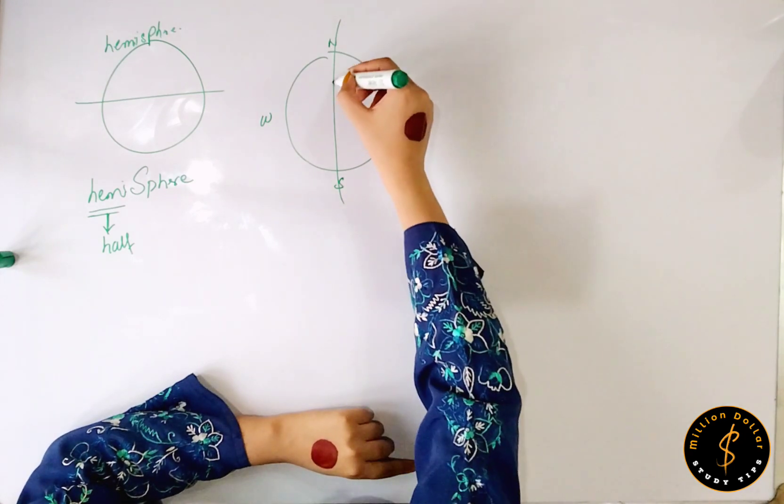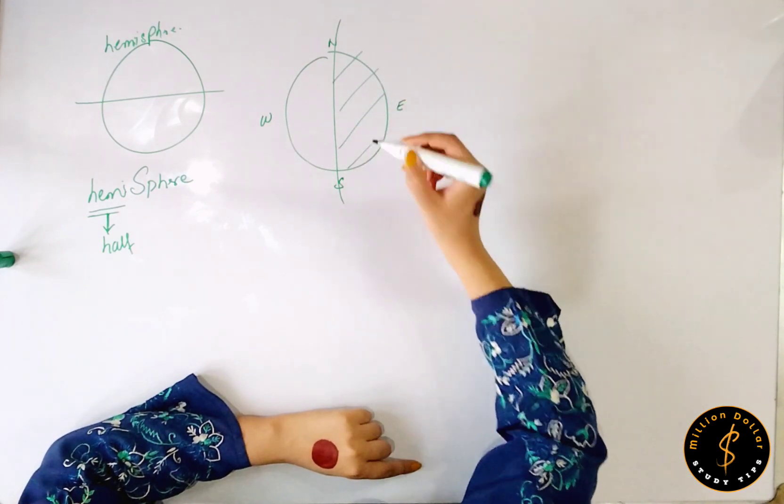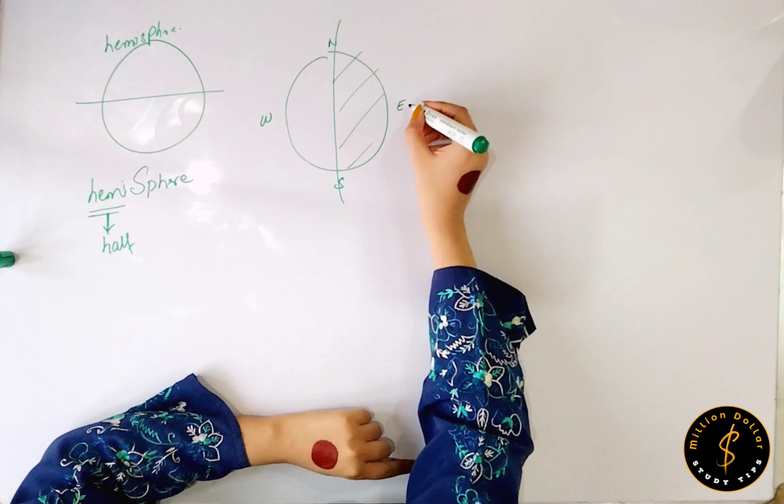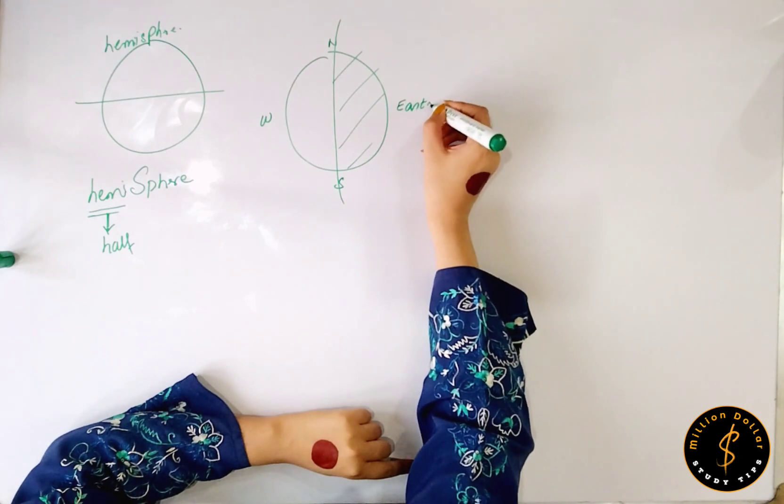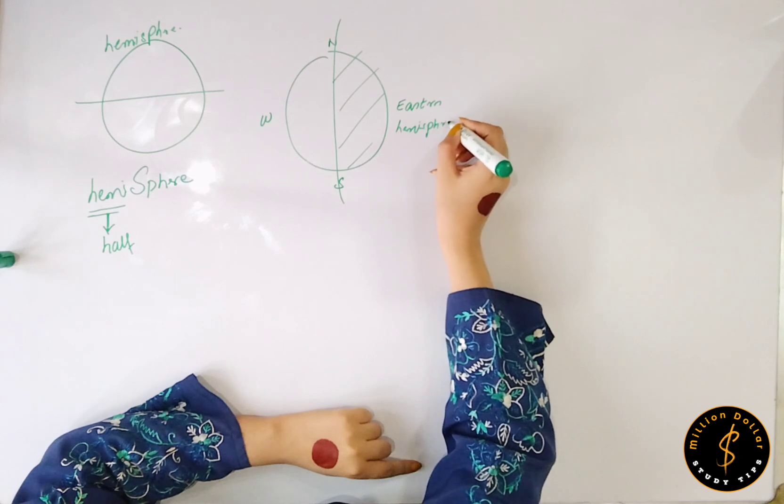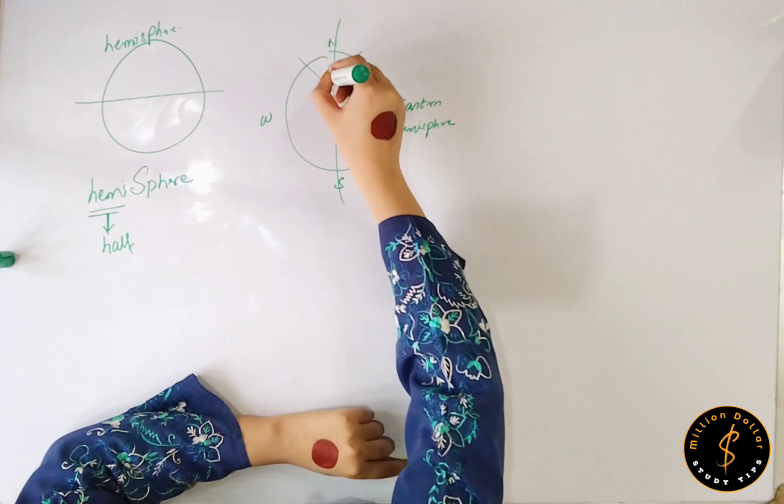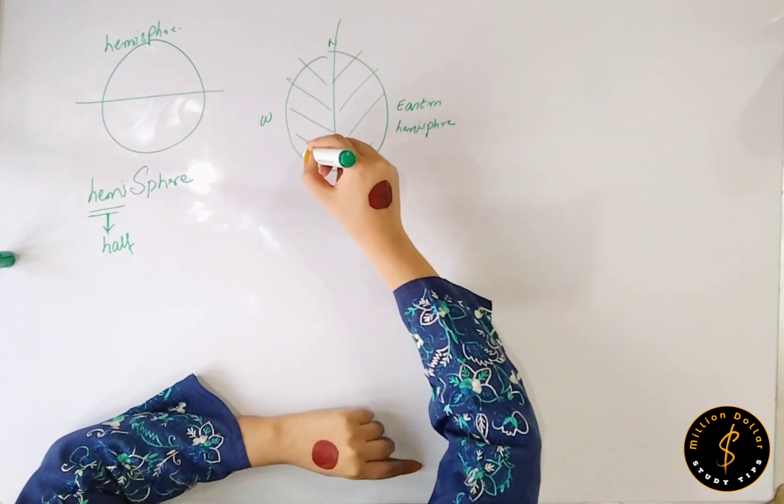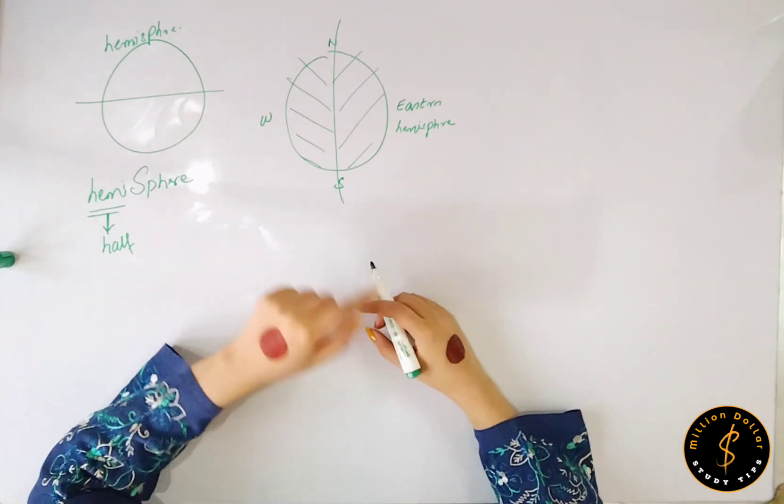So this whole portion will become your eastern hemisphere. And this half of your planet Earth will become your western hemisphere.